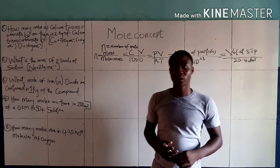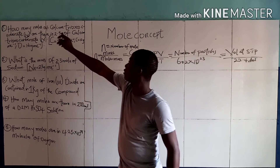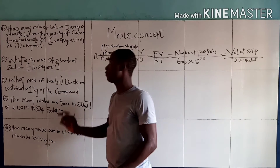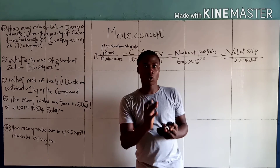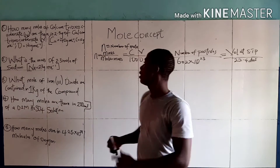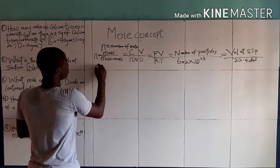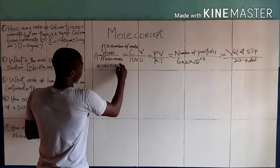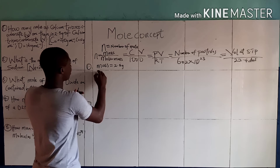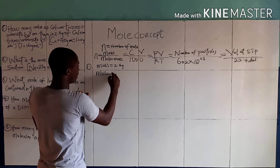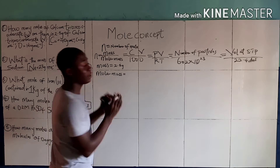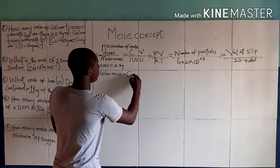Question 1 says: how many moles of calcium carbonate (CaCO₃) are there in 2.5 grams of calcium carbonate? When you see this type of question, identify your parameters. The mass of calcium carbonate is given as 2.5 grams. The chemical formula of calcium carbonate is CaCO₃, which you can also call limestone.